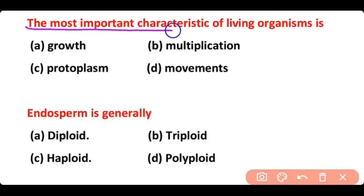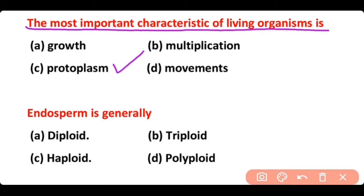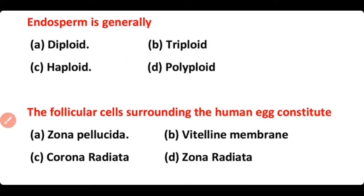The most important characteristic of a living organism is: growth, multiplication, protoplasm, or movement. The correct answer is option C. Protoplasm is the most important characteristic of a living organism.